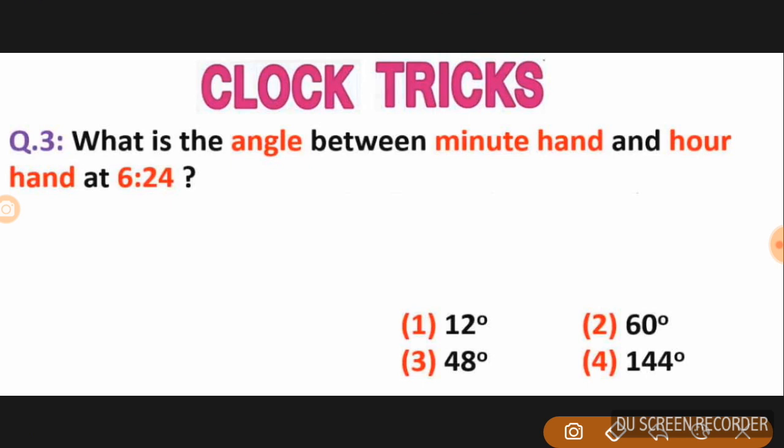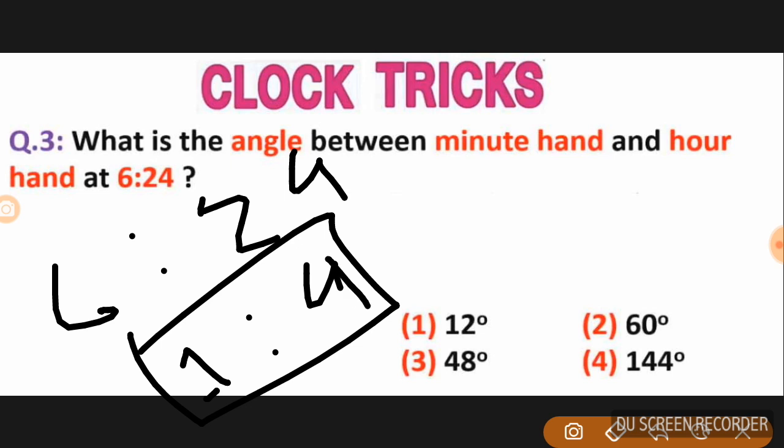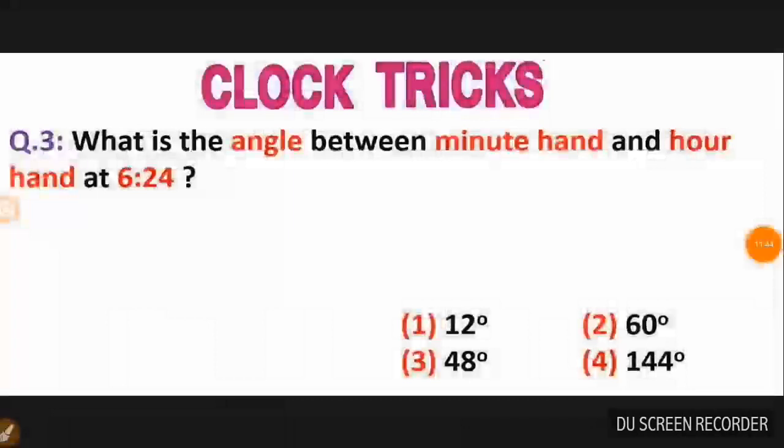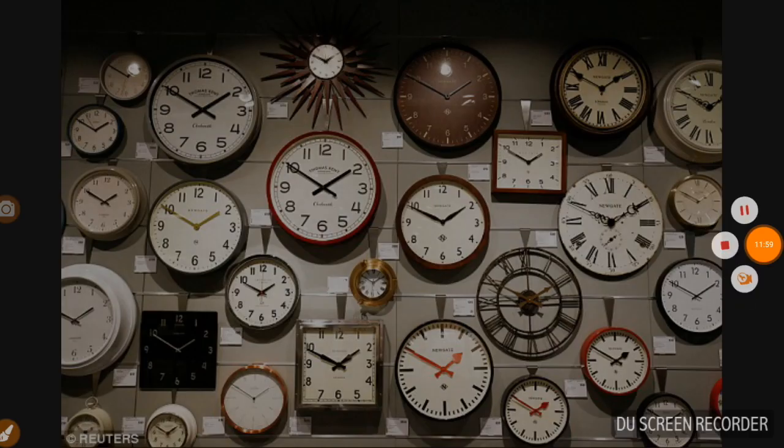The ratio method is easier. Remember: one ratio six works for some problems. Using these ratios - whether 1:10 or 1:6 - helps you solve clock problems faster. The traditional method works but these tricks make calculations quicker for competitive exams.